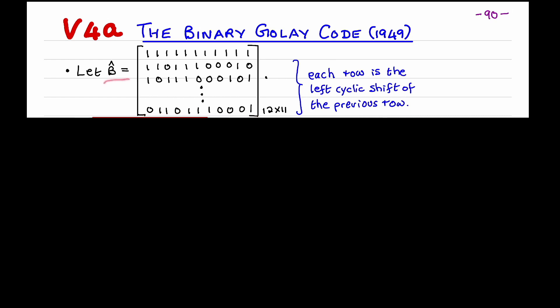So let b-hat be this 12 by 11 binary matrix. The first row consists of all ones. The second row has weight 6. The third row is a left cyclic shift of the second row. So you shift the second row one position to the left, and the leftmost one becomes the rightmost one of the third row. The remaining rows of b-hat are left cyclic shifts of the previous row. So in effect, the matrix b-hat is defined by the first row of all ones, the second row, and then the other 10 rows are left cyclic shifts of the second row.